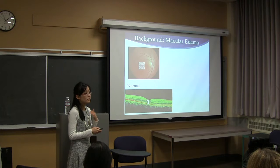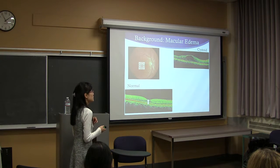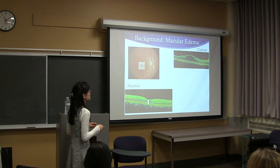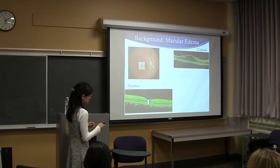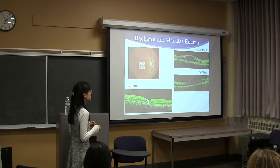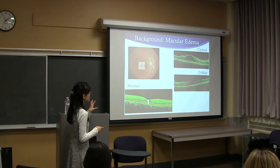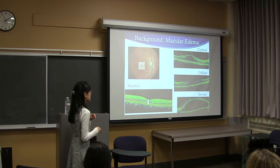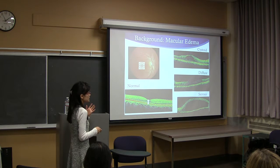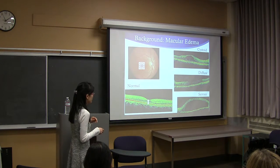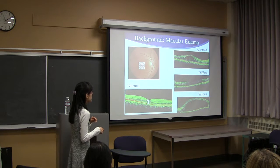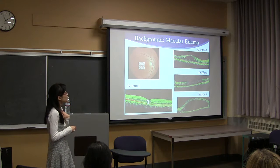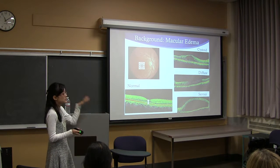Fluid can accumulate in one of three patterns. The first is cystoid, where you can see intra-retinal cysts in the layers of the retina — the fluid is the hypo-reflective dark spot. Diffuse is a second subtype, where you have diffuse thickening throughout the retina and an absence of cysts. The third subtype is serous macular edema, or a serous retinal detachment, where you get fluid above the retinal pigment epithelium and below the neurosensory retina. My research will study whether there are differences in outcomes based on these different subtypes.